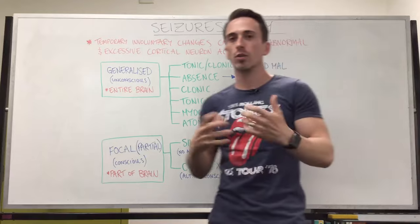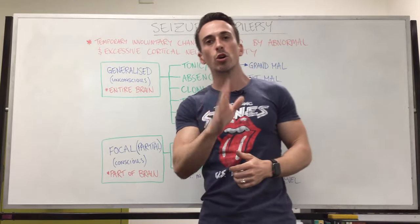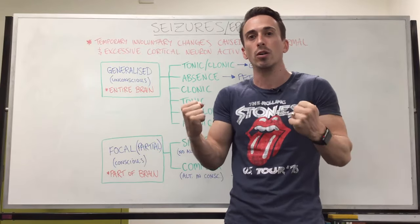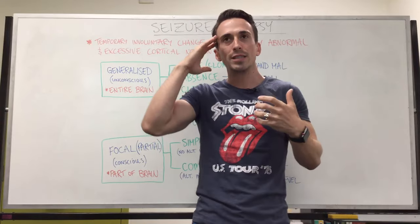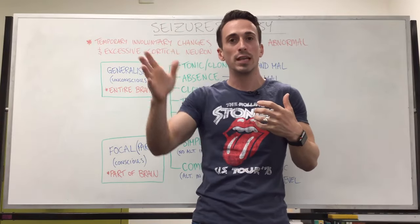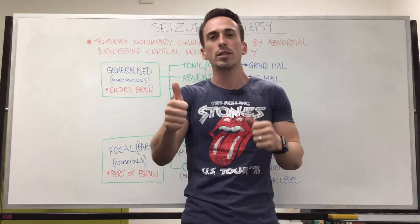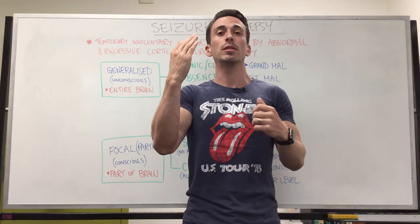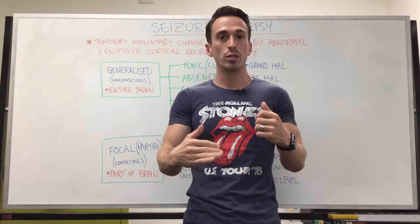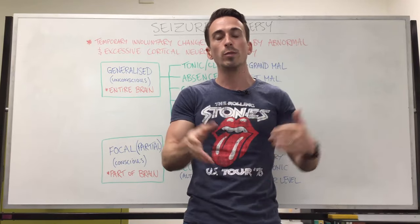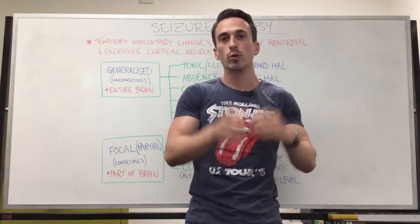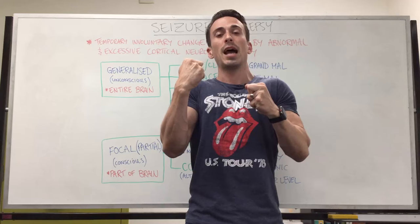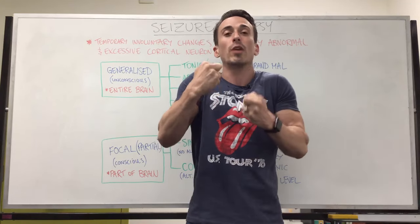The most common generalized seizure is the tonic-clonic seizure, which used to be called the grand mal seizure or the major contractile seizure. This is the one you probably think about when you hear of seizures. The first thing that usually happens is a cry — the body contracts, air escapes, you hear this cry — and then the individual becomes unconscious, falls to the floor, followed by rhythmic contraction and relaxation of the body. Tonic is where the muscles become rigid, and clonic is a rhythmic relaxation and contraction.